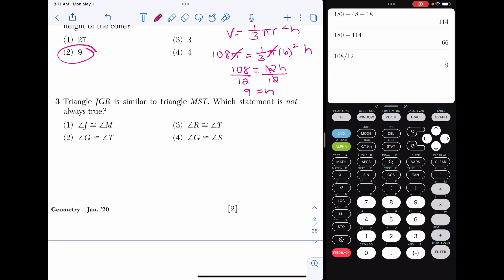Number three, triangle JGR is similar to triangle MST. Which statement is not always true? For a question like this, it is intentional that they are not giving you the picture. So let's draw one. Don't worry about it being drawn accurately. What is important, though, is that when you draw it, the letters correspond. Since J is listed first and M is listed first, those should be in the same spot in the triangles. Same with G and S, same with R and T.